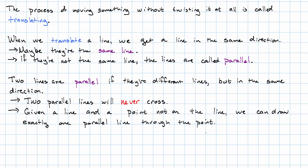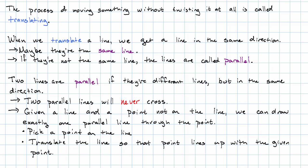Given a line and a point that's not on the line, we can draw exactly one parallel line through the point. How? How do we do that? Well we pick out a point on the line and then we translate the line so that that point lines up with the given point.